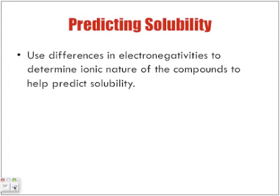Predicting solubility — we're going to look a little more about predicting solubility in an upcoming chapter where we will be looking at the guidelines to solubility, but for now we're just going to look at the following. We're going to use differences in electronegativities to determine the ionic nature of compounds to help predict solubility.